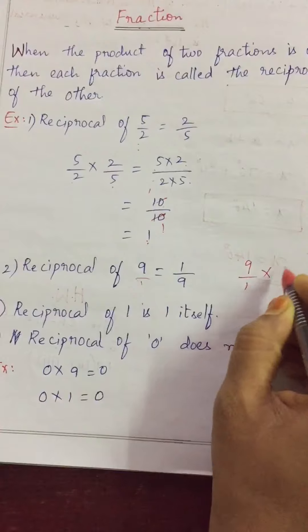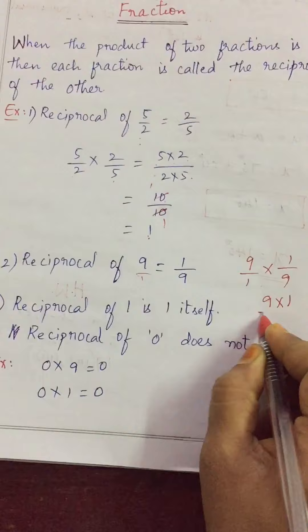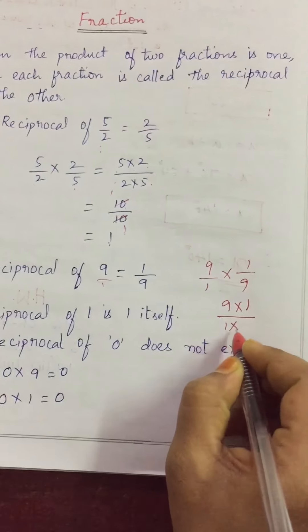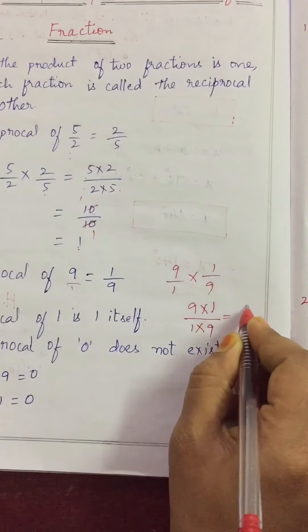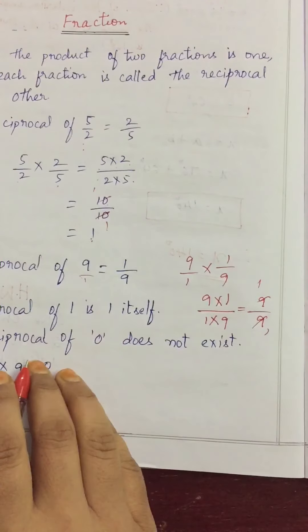9 by 1 into 1 by 9. That is nothing but 9 into 1, numerator into numerator, whole divided by denominator into denominator. 9 times 1 is 9. 1 times 9 is also 9. 9 over 9 is 1. So, answer is 1.